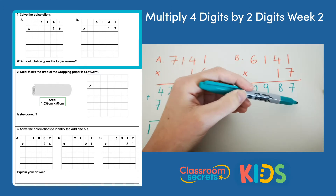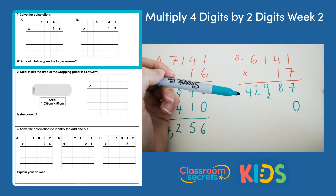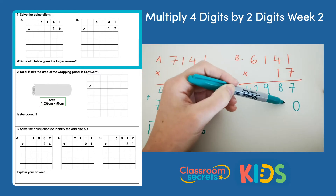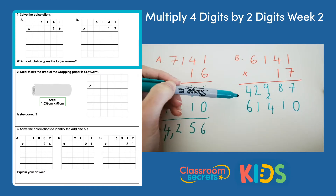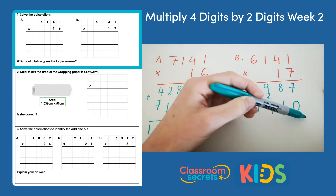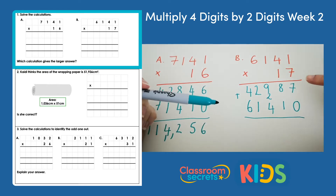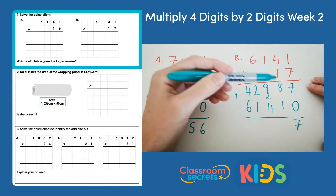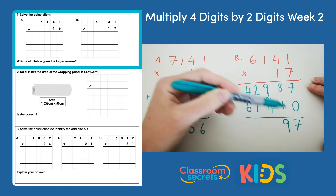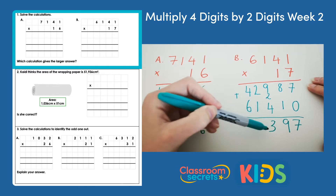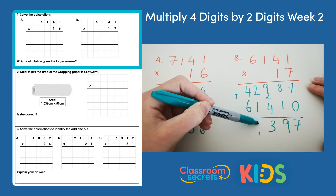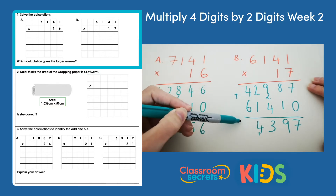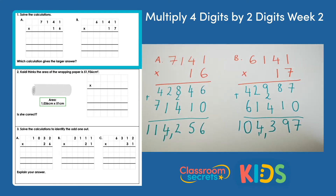Step 2 is to multiply by the tens number. So we put the zero in the ones column to indicate that. 1 times 1 is 1. 1 times 4 is 4. 1 times 1 is 1. And 1 times 6 gives us 6. Then the final job is to add all together. So 7 and 0 is 7. 8 and 1 is 9. 9 add 4 is 13, so 2 add 1 is 3, add 1 more is 4. And then 6 and 4 make 10. So the answer to this question is 104,397.